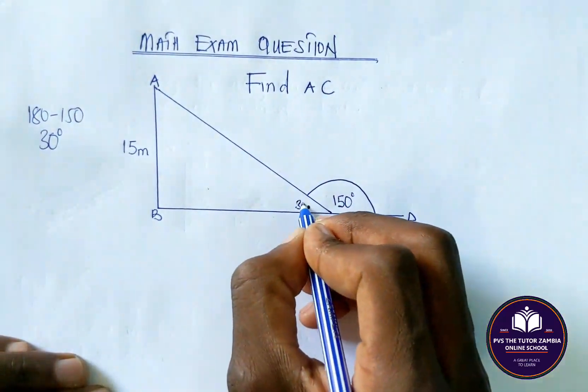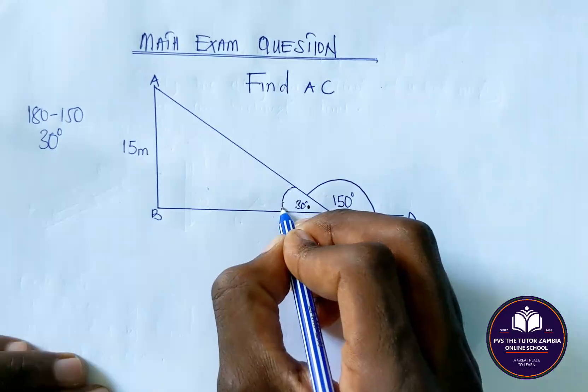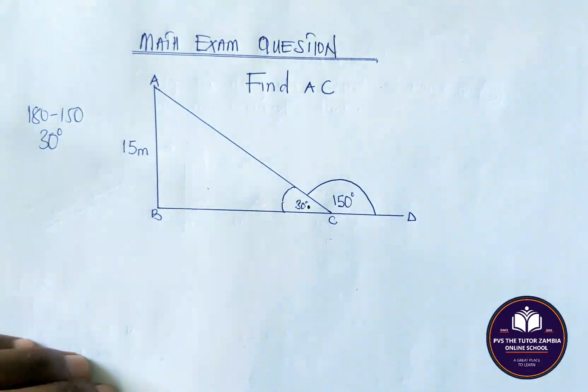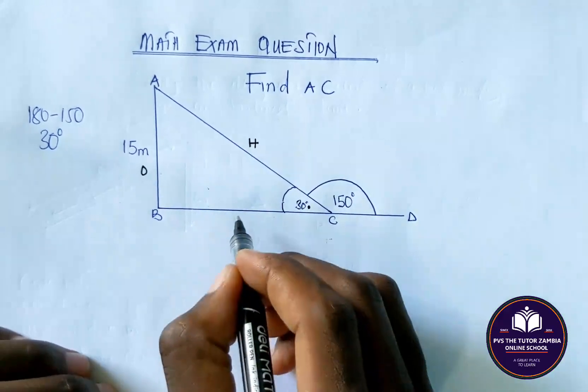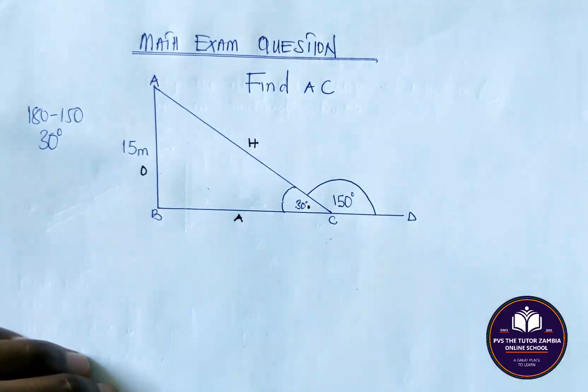That means this angle here is 30 degrees. That means this one becomes our opposite, this becomes our hypotenuse, this becomes our adjacent. Are we together?